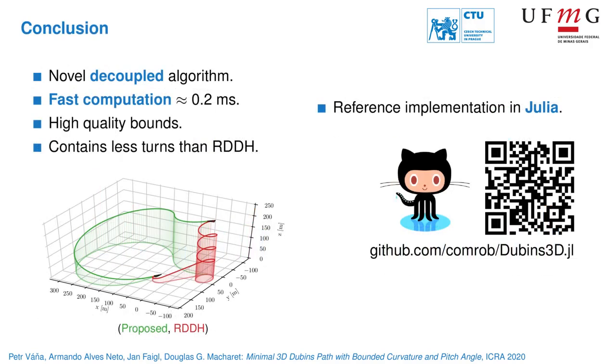To conclude, we have proposed a novel heuristic algorithm that is able to find 3D Dubins path in only about 0.2 milliseconds using a single core of a conventional computer. The proposed solution also outperforms existing methods in solution quality for most of the cases and provided lower and upper bounds are very tight.